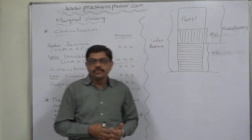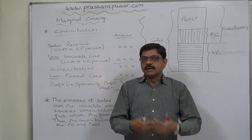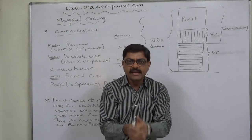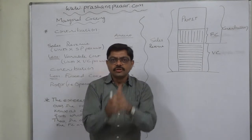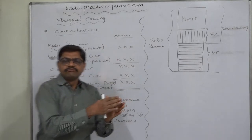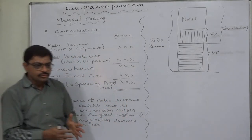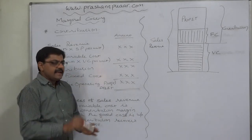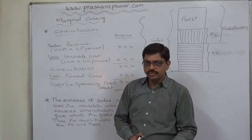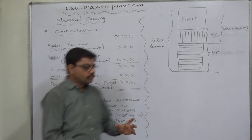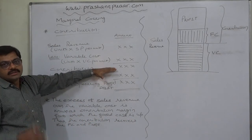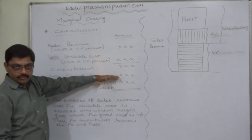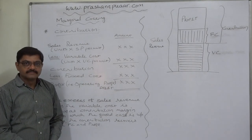We should discontinue any product only if the contribution margin we are going to lose because of the discontinuation of that product is recovered from the additional sales of the other remaining products. The golden rule about contribution and product performance is: as long as a product gives good contribution, its sales should be encouraged. Our first aim is to earn sufficient contribution so that we can recover our fixed cost and earn sufficient profit. Thank you very much.